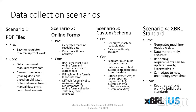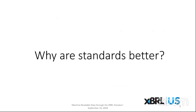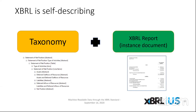XBRL is self-describing, which means nothing beyond the XBRL report and the taxonomy used to create it is necessary for receiving systems to understand and interpret the data received. The taxonomy represents the collection of line items that can be reported, and the XBRL report contains the facts that are reported for a specific situation — what we call an instance.